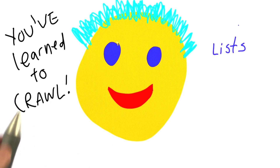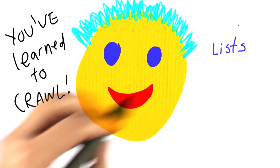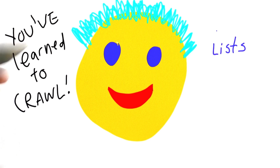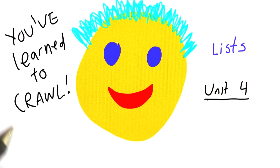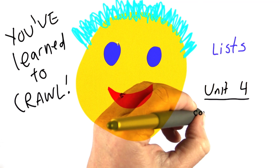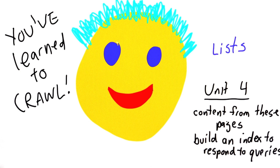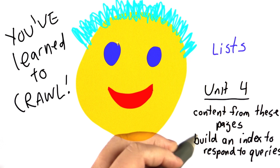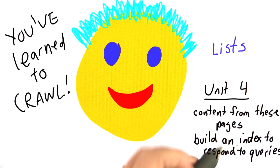We'll see lots of other things in the next unit, as well as the units that follow, that use lists. We haven't quite finished building a search engine. We have a way of getting a great start towards our corpus, finding all of these pages to crawl. What we need in unit four is the way to get the content from those pages, by starting from our seed page and following the crawl web procedure that you wrote. And then we'll use that to build an index so we can respond to queries when someone's doing a search for a particular term.